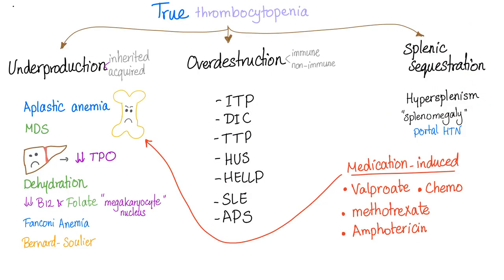True thrombocytopenia — it's either underproduction, overdestruction, or splenic sequestration. Underproduction could be inherited or acquired, such as aplastic anemia — which should really be called aplastic pancytopenia — myelodysplastic syndrome, liver disease because the liver secretes thrombopoietin, decreased B12 and folate because they are important for nucleus synthesis and megakaryocytes need them too, Fanconi anemia which is aplastic pancytopenia, and Bernard-Soulier disease.